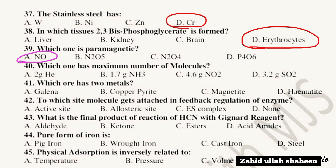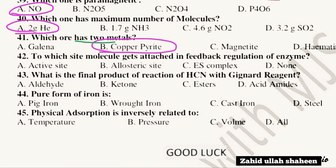Question 40: Which one has the maximum number of molecules? 2 grams of helium has the maximum number of molecules. Question 41-42: In feedback regulation of enzymes, the inhibitor attaches at the allosteric site — option B.